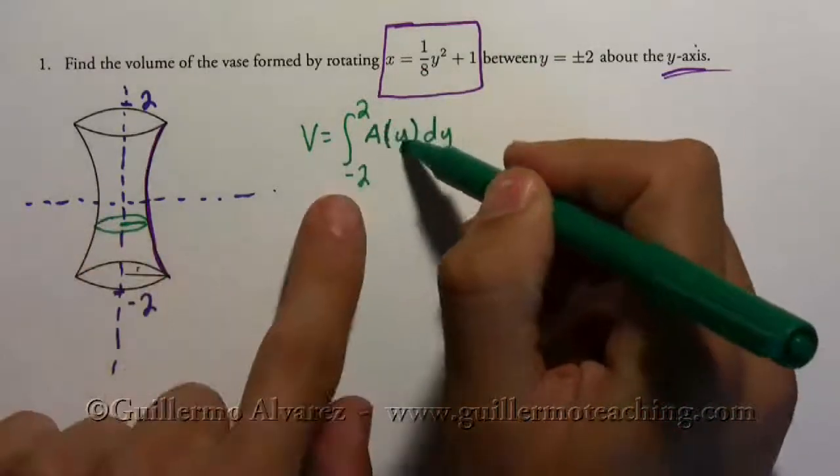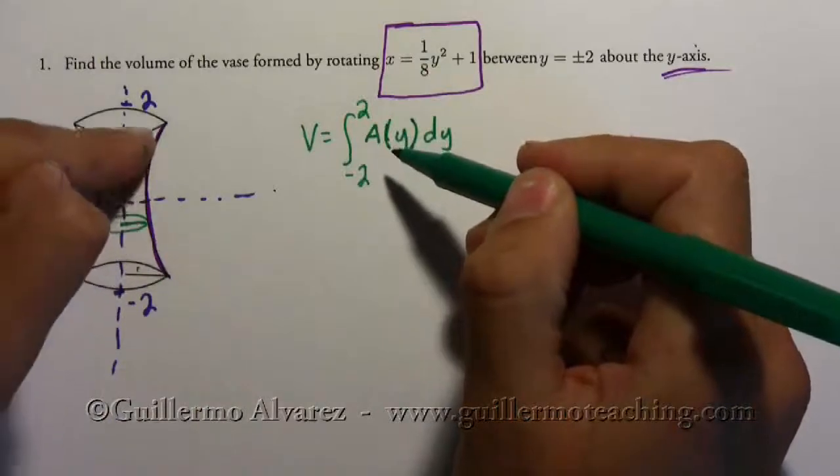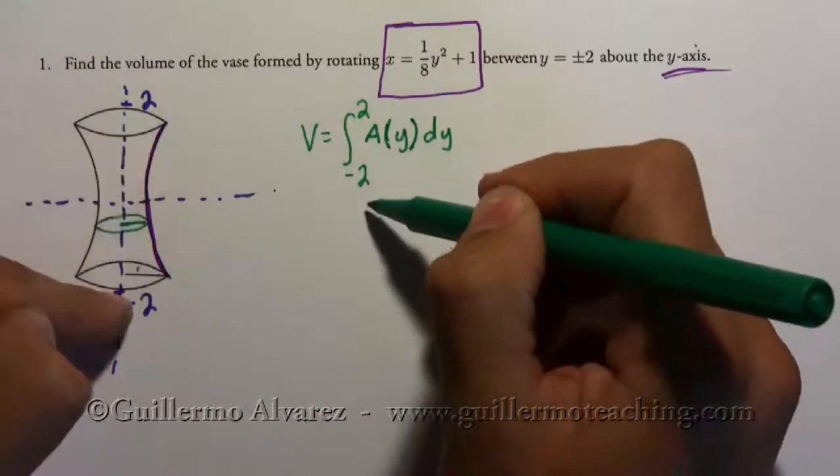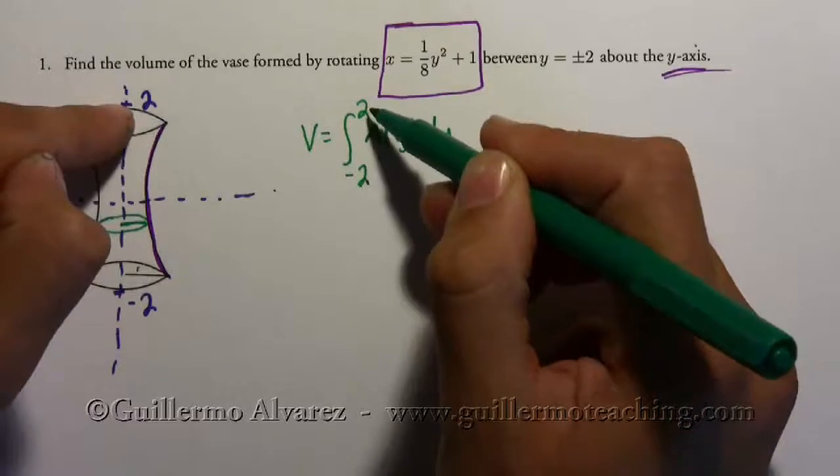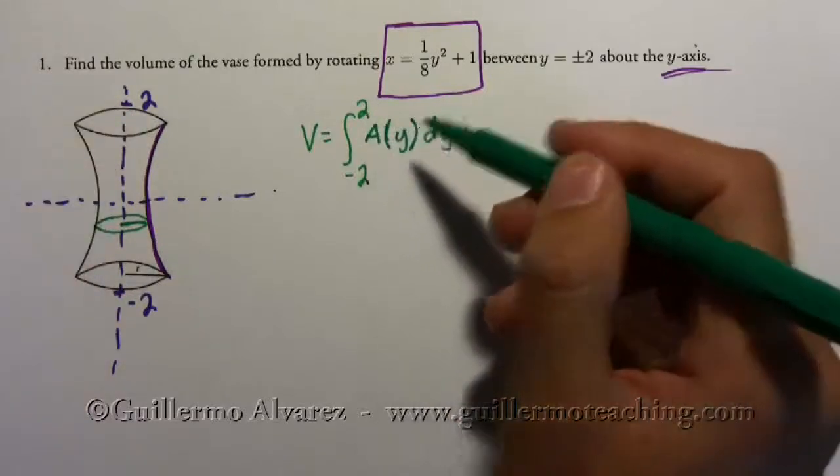And these all match, so I get the area with respect to y because it's changing with y. And then I'm going to go starting from y equals negative two to y equals positive two.